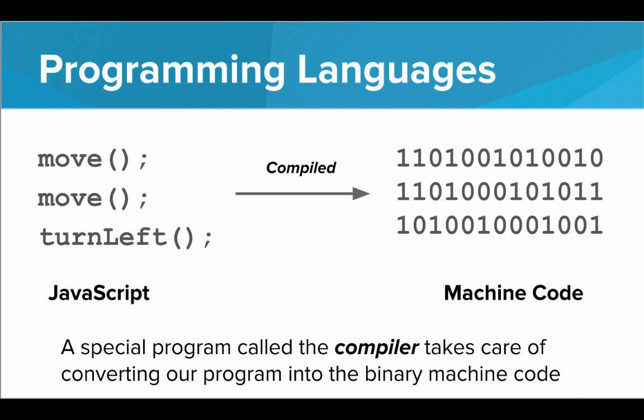So if we have a program, move, move, and turn left, this is written in JavaScript. This is a high level language. And when we go to run it, there's actually a special program called the compiler that takes our program and turns it into the proper machine code, the proper zeros and ones that actually get the computer to execute the program. So programs get compiled into machine code, which is just zeros and ones.